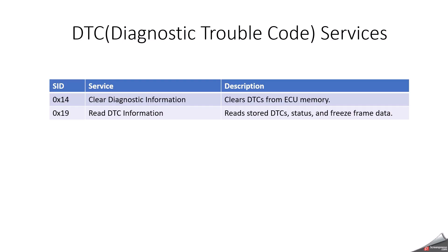For DTC-related services, we have Service IDs 0x14 and 0x19. Service 0x14 is mainly used to clear all DTCs from ECU memory, and 0x19 is for Read DTC Information. These two services communicate via DCM.